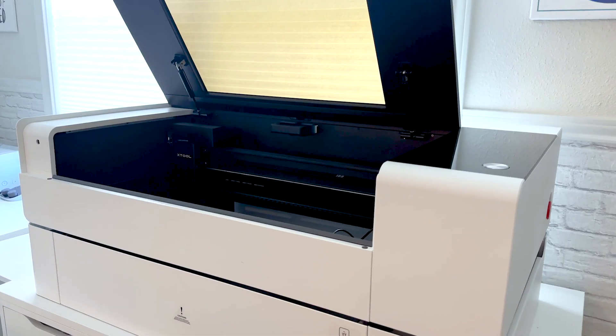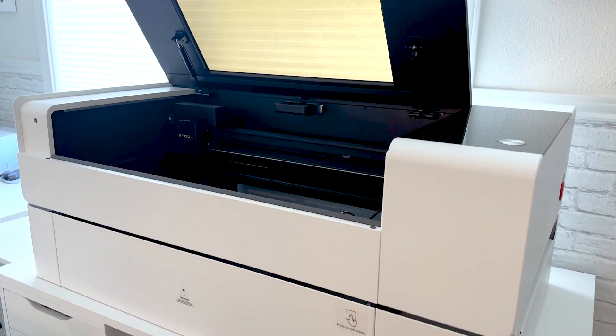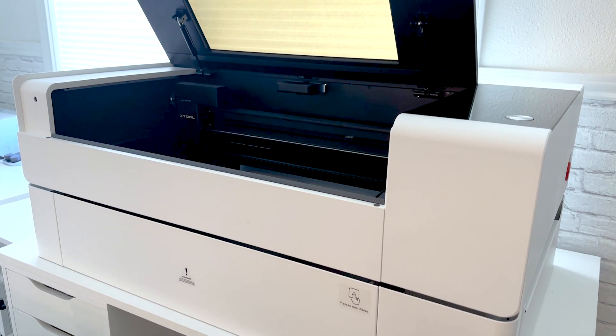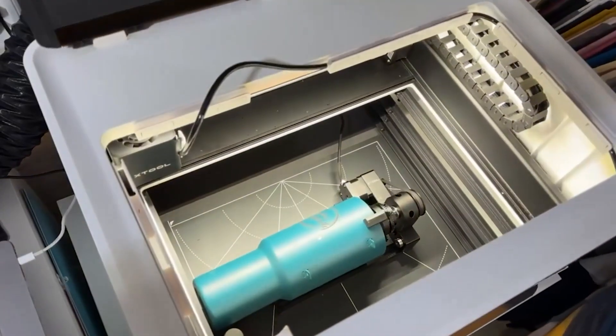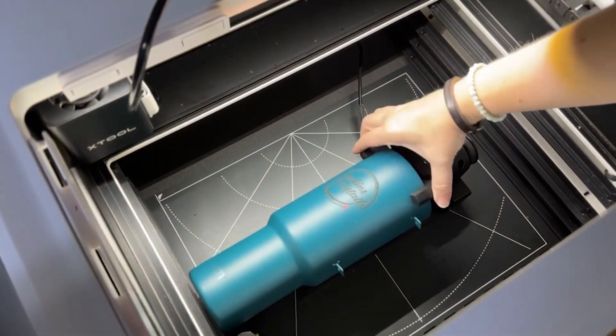I'm using the X-Tool P2 laser, which is a CO2 laser, and it's on the riser base. This riser base is necessary in order to fit tumblers of this size in the machine. I've also engraved these tumblers in the X-Tool M1 machine with the riser base. So these steps and settings I share are going to be using the P2, but hopefully seeing my process will help you out even if you're using a different X-Tool machine or a different laser.